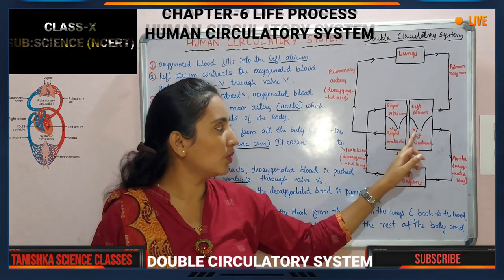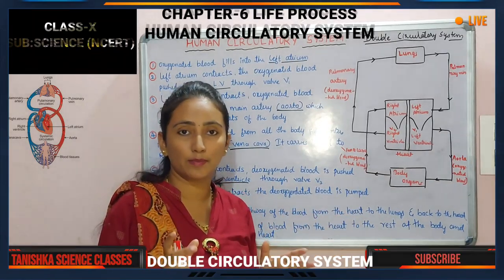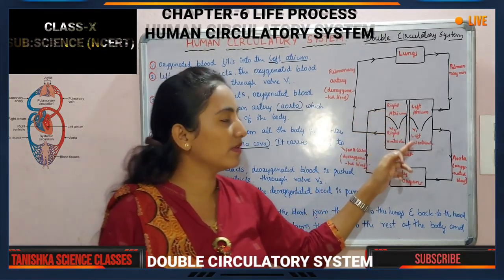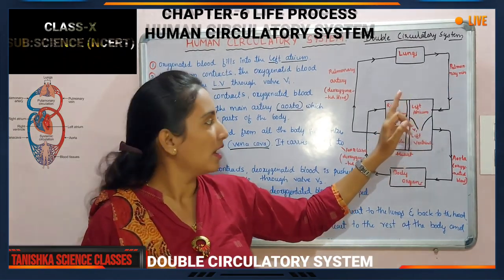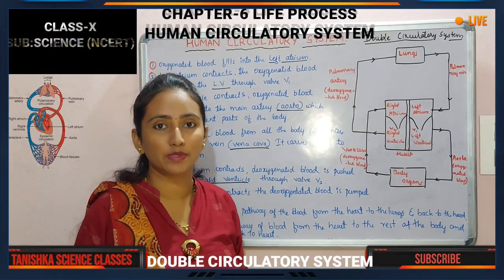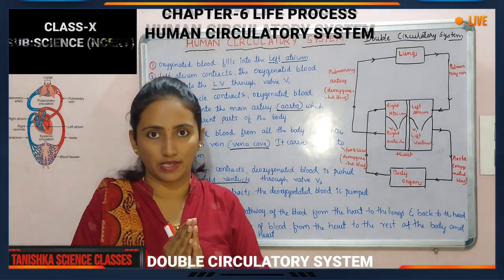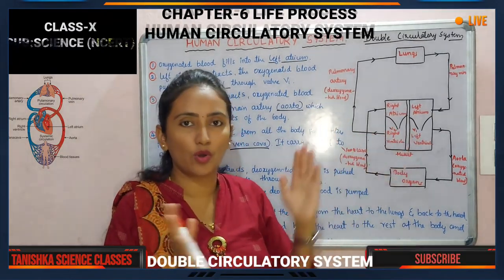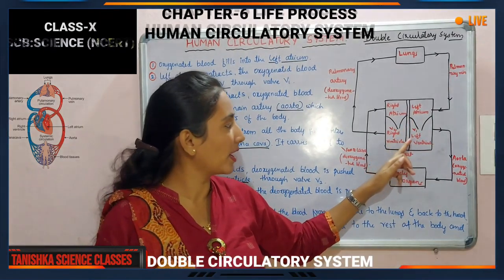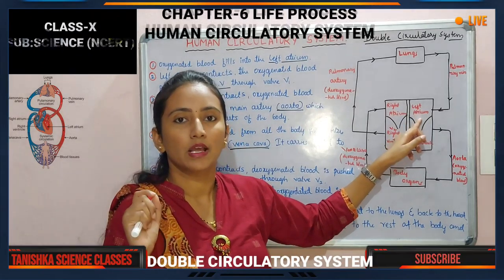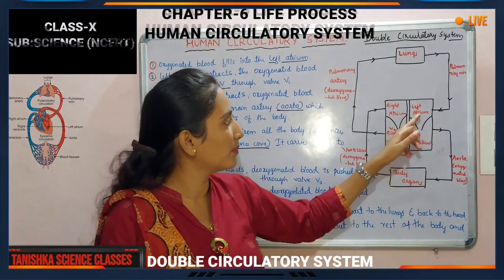The four chambers — the upper two are called atriums and the lower chambers are called ventricles: left atrium, right atrium, left ventricle and right ventricle. Oxygenated blood fills into the left atrium, then the left atrium contracts and blood is pushed down into the ventricle through valve V1. There are two valves, V1 and V2, which are very important in transferring blood from the atrium to the ventricle, preventing the blood from going back.